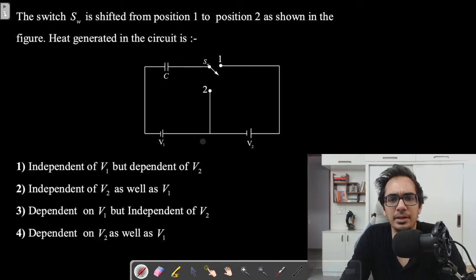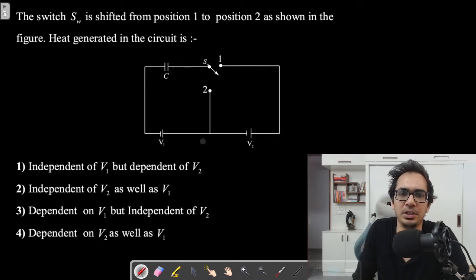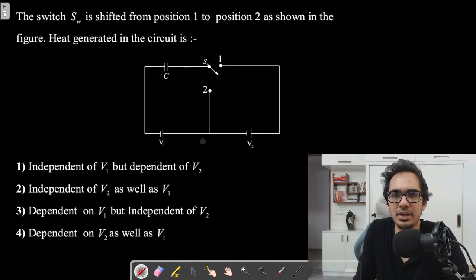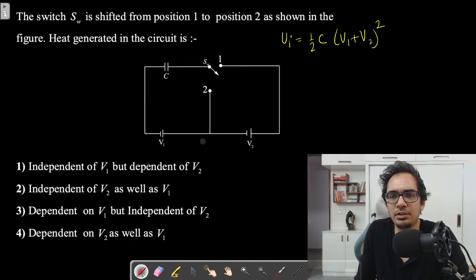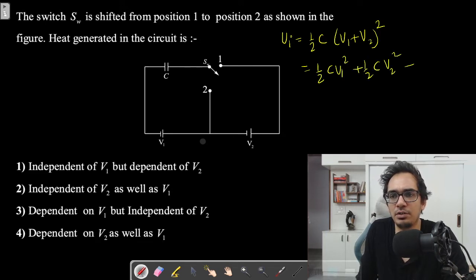When the switch is connected in position one, both batteries work together because the positive terminal is connected to the negative. The initial energy is equal to ½C(V1 + V2)². Expanding this: ½CV1² + ½CV2² + CV1V2. This is the initial energy.